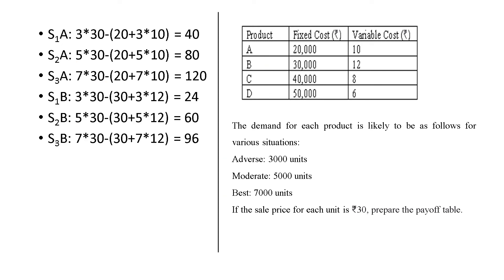The next is S1B, S2B and S3B. Again the same thing. That is 3 into 30 minus here, the fixed cost has been changed. Fixed cost is 30,000. So, 30 plus 3 into 12. The variable cost is 12. Same way S2B and S3B.